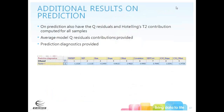There are also additional prediction results in the Unscrambler X. On prediction, you get Q residuals and Hotelling T-squared contributions computed for all samples. Average model Q residuals contributions are also provided, as are prediction diagnostics summarized with RMSEP, bias, slope, offset, and so forth — all accessible in one matrix.